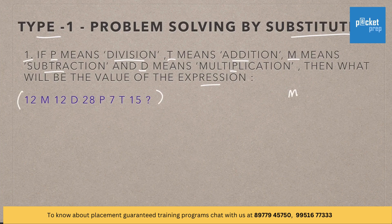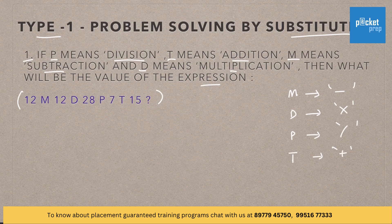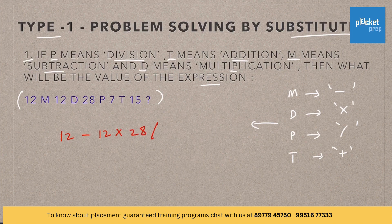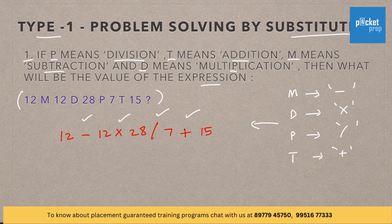Let us write down first. M means subtraction, D means multiplication, P means division, and T means addition. Let us substitute them in the given expression: 12 minus 12 into 28 divided by 7 plus 15. We have substituted minus in place of M, multiplication in place of D, division in place of P, then addition in place of T.